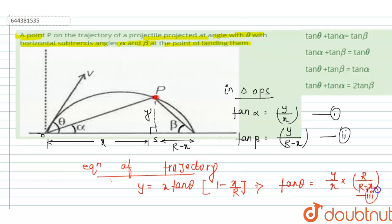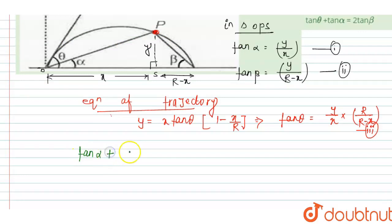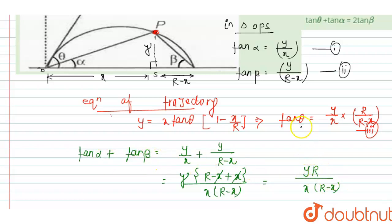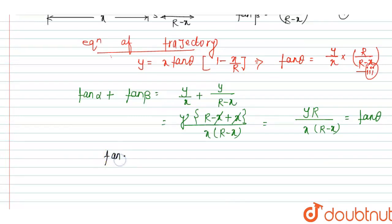Now, tan alpha plus tan beta equals y/x plus y/(r minus x). Taking LCM as x(r minus x), and factoring out y, we get y·r over x·(r minus x). Looking at equation three, tan theta also equals y·r over x·(r minus x). Therefore, tan alpha plus tan beta equals tan theta.